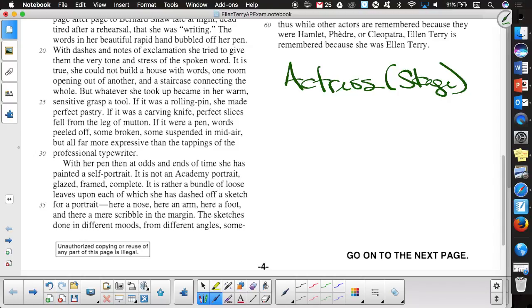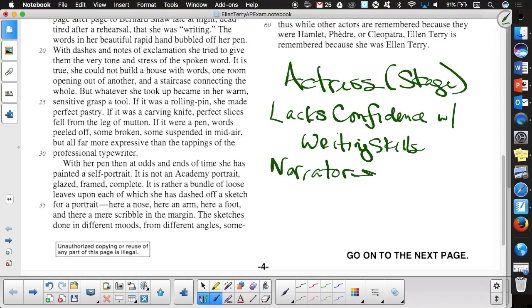Late 1800s is her heyday into the early 20th century. She's the preeminent Shakespearean female actress of her time period. She's an official dame in Great Britain. What else do we know about her? You said unconfident? She lacks confidence with writing skills. What's the narrator think about her writing skills? That she is talented. So narrator thinks she's a good writer, but she herself, Ellen Terry, doubts her abilities.